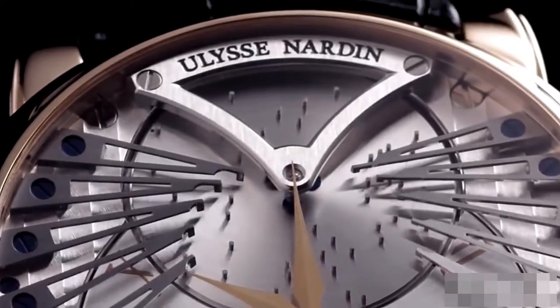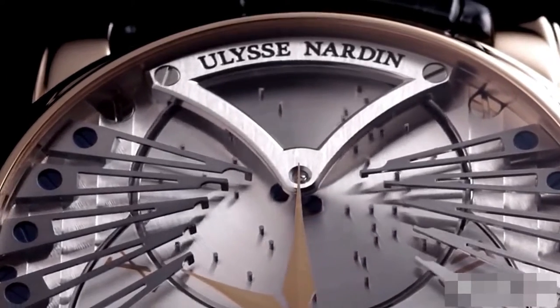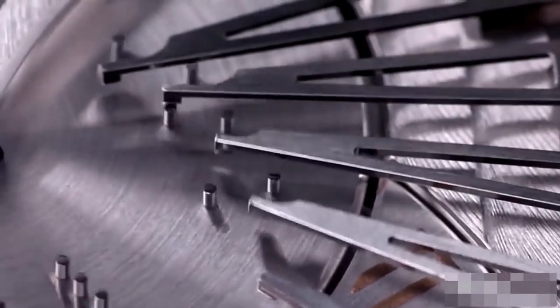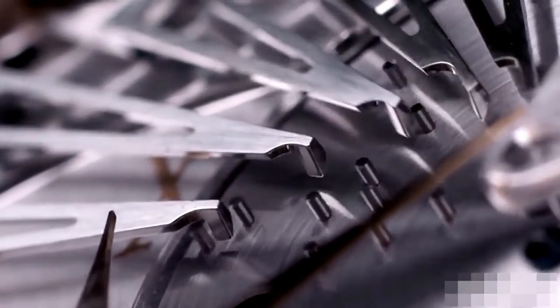True to its name, The Stranger plays Frank Sinatra's enigmatic song, Strangers in the Night. Two years after the debut of The Stranger, Ulysse Nardin followed it up with a second edition that plays Antonio Vivaldi's famed musical piece, La Primavera, from the Four Seasons Concerto.